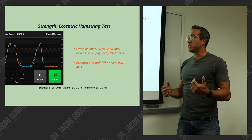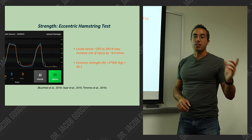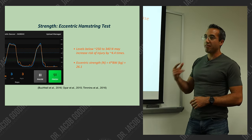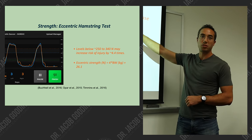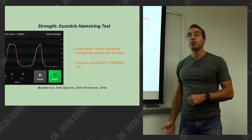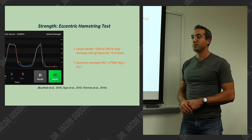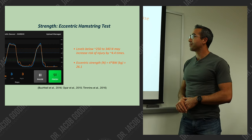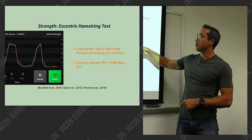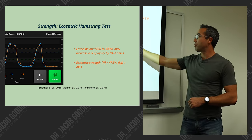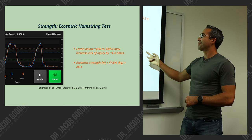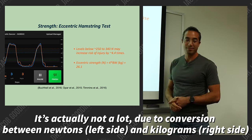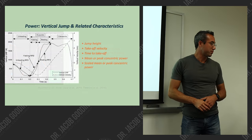Another common one is eccentric hamstring strength. We have a Nord board here in the lab. The literature on this is still developing. A lot has been done in the last five to ten years. Some numbers I found: levels below 250 to 340 newtons may increase risk of hamstring strain during high-velocity sprinting. Another study came out with an equation: eccentric hamstring strength equals four times body weight plus 26.